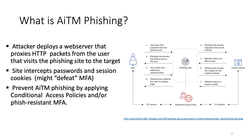AiTM phishing — adversary in the middle — is a rising trend in the phishing landscape. In this scenario, the attacker deploys a web server acting as a reverse proxy. This phishing server is capable of not only intercepting the username and password, but also the session cookie. That means the attacker intercepts the session cookie on the way back from Azure AD to the victim's browser, and then replays that cookie to gain access to the compromised account.